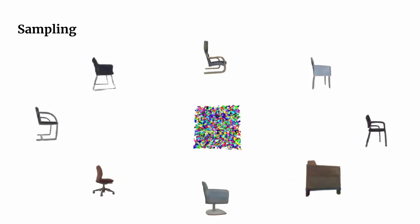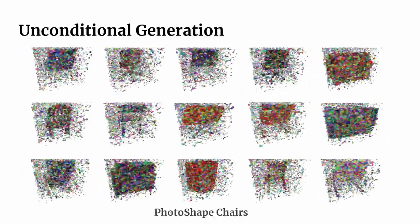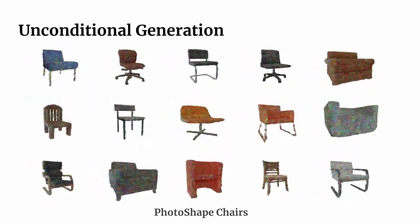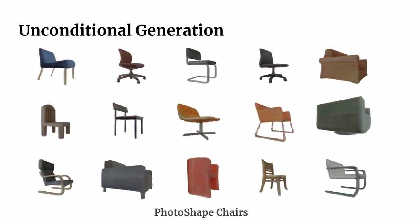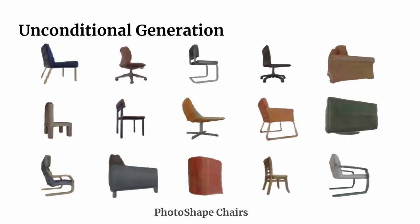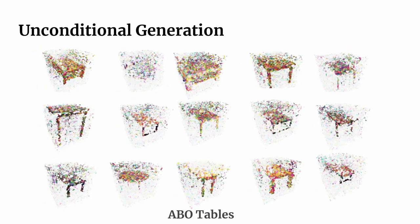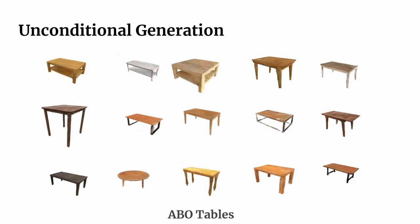At inference time, we apply ancestral sampling, where we gradually denoise from complete noise to samples from the underlying data distribution. The denoising diffusion formulation enables our model to learn strong priors for radiance field synthesis.